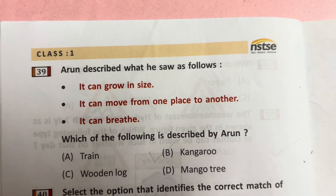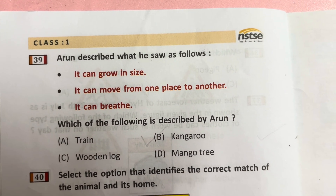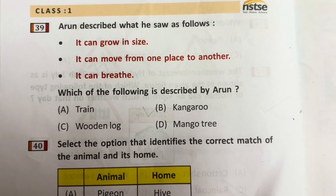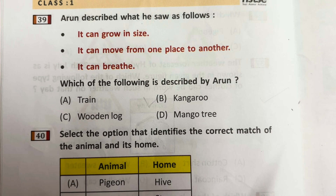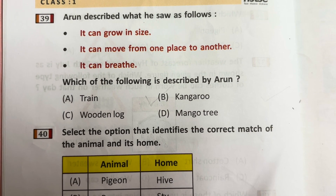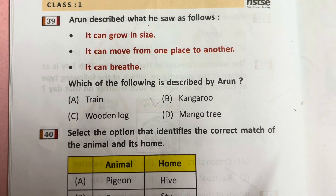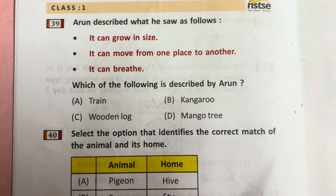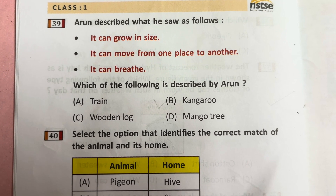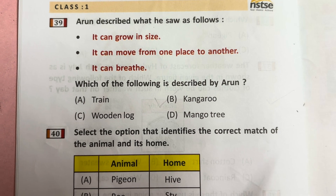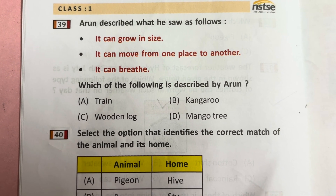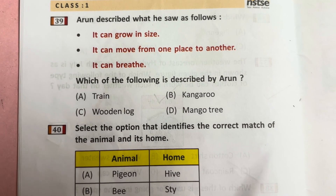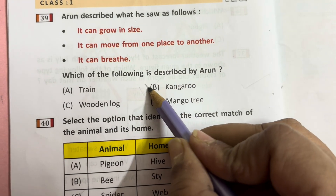Question 39: Arun described something: it grows in size, it can move from one place to another, and it can breathe. Which of the following is described? Train — no, it does not grow. Wooden lock — no, it does not grow. Kangaroo — it can move, breathe, and grow, so correct. Mango tree — it can grow and breathe but cannot move. Answer is B, kangaroo.